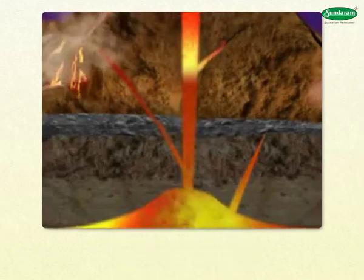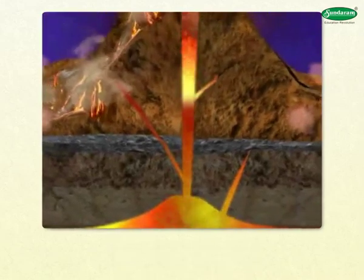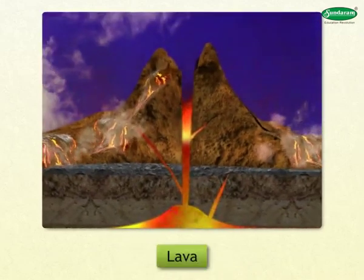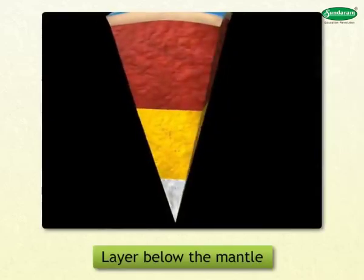When magma reaches the earth's surface through volcanic activity, it is called lava. The core, the layer below the mantle, is called the core.